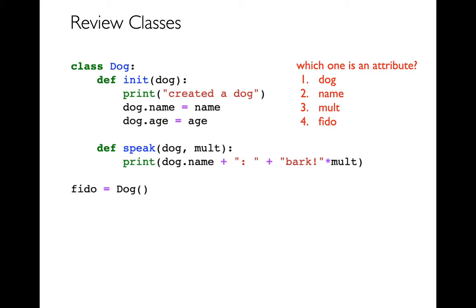And the answer is that, well, I guess I see two attributes here. I have a dog.name and a dog.age. So either name or age would be a fine answer. And I guess name is only one of the options, so the answer here is definitely two. Name is an attribute.